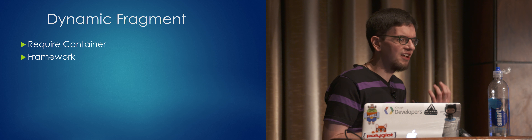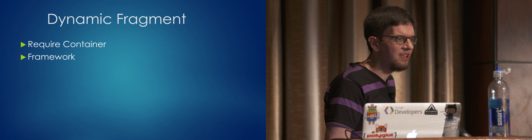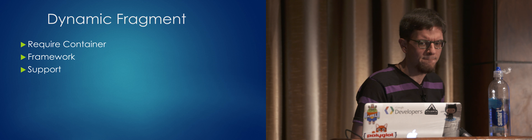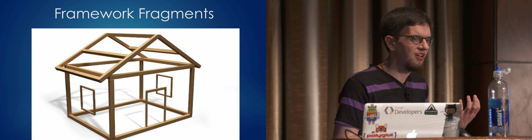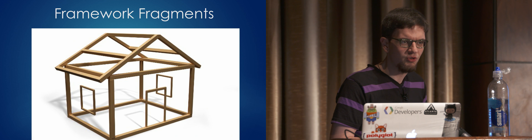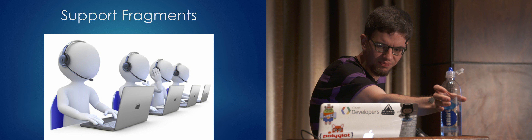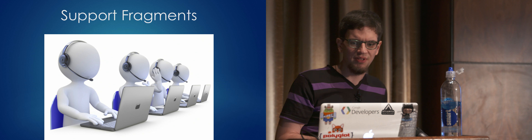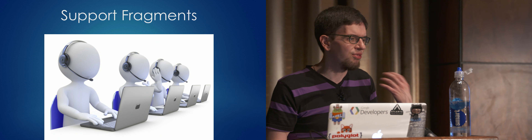Each of these containers requires an ID. No matter which type of fragment you're using, there are two main subtypes within dynamic fragments: framework and support. Framework fragments have been around since fragments' inception some five years ago. They are rarely updated and do not work with app compatibility — the current version of activities — which is where support fragments come into play. Support fragments come from the version 4 support library and do work with AppCompat activities. They are constantly updated alongside the support library, usually three or four times per year.